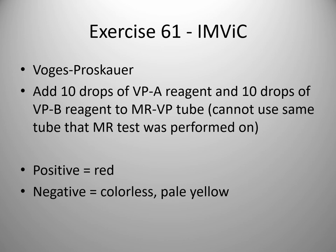The Voges-Proskauer portion of this test requires a separate MRVP tube — you do not use the same one that you added the methyl red reagent to. After 24 hours of growth, this one requires the addition of two different reagents, referred to as Voges-Proskauer A and Voges-Proskauer B, or VPA and VPB. First, you add the A reagent — about ten drops, anywhere from five to ten. That is followed by adding five to ten drops of the VPB reagent. Don't mix it; just let it sit. A positive would be a red color. Negative would be colorless to pale yellow.